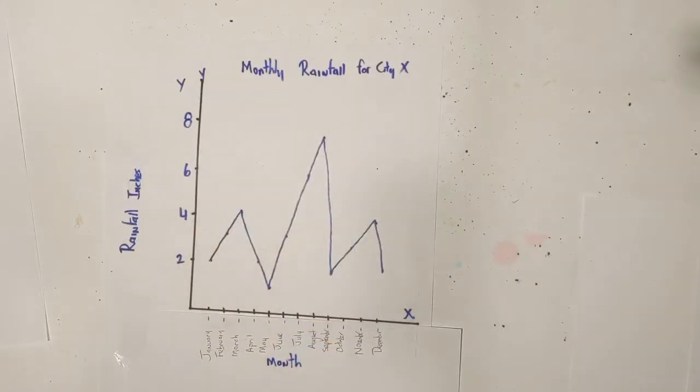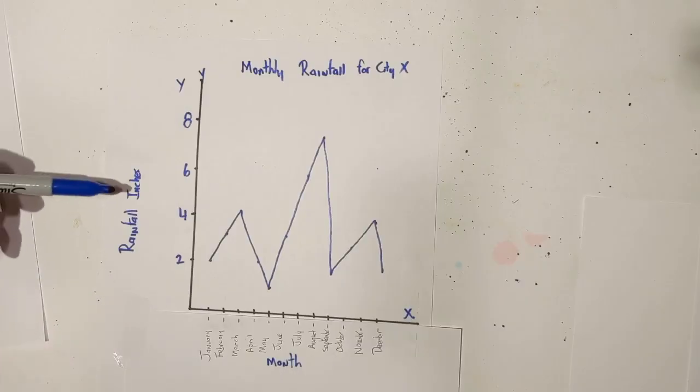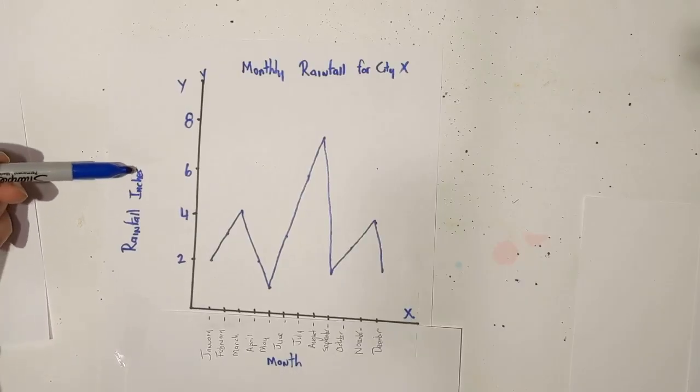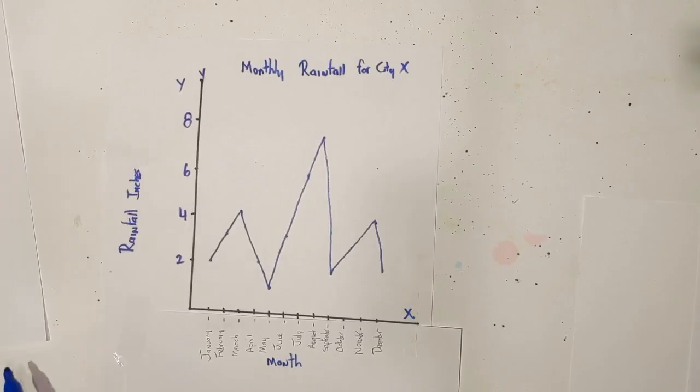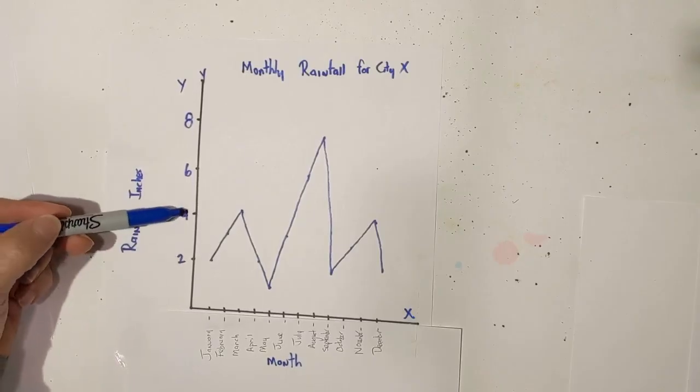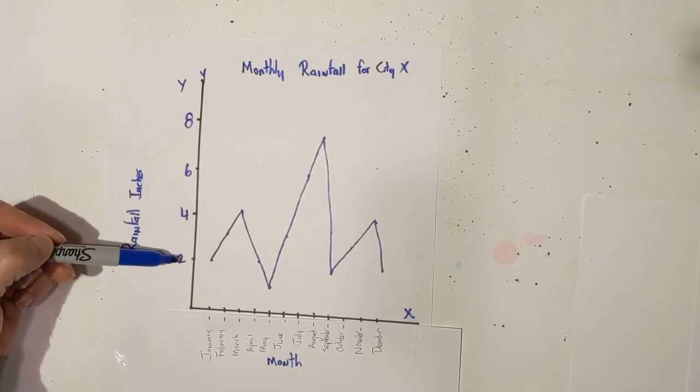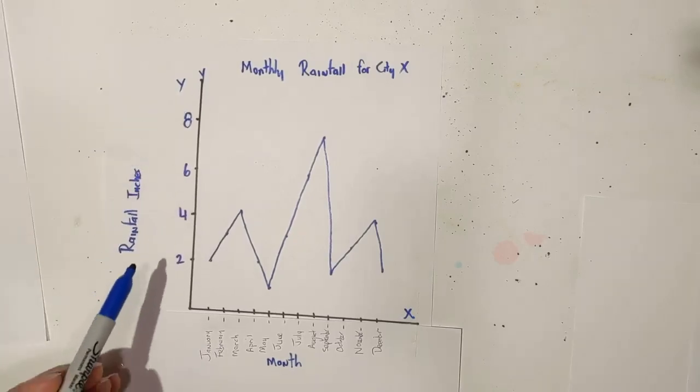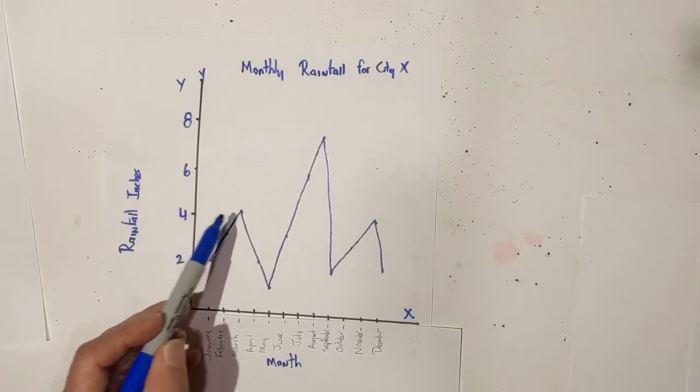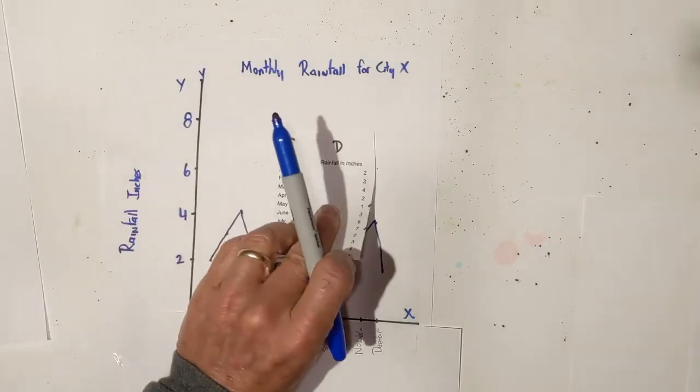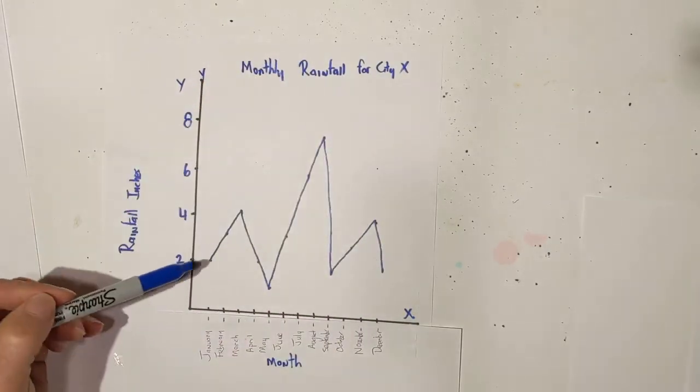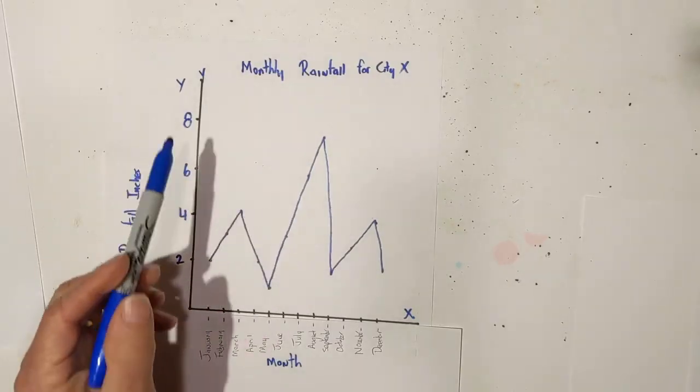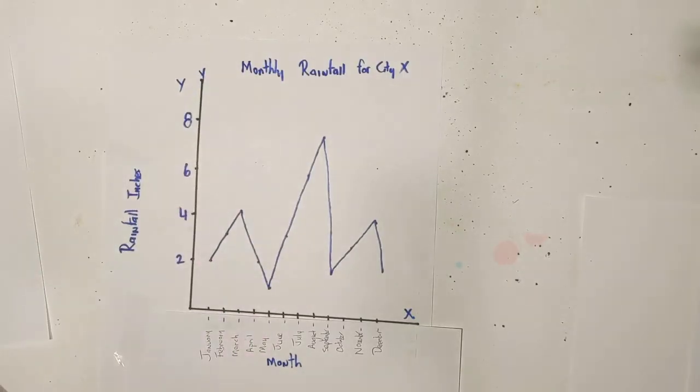In summary, here's what I did. I placed the independent variable on the x-axis and labeled it. I put the dependent variable on the y-axis and labeled it. I figured out a consistent scale. Notice that it is going up by two each time. I plotted all of my data from my data table, I connected the dots, and gave it a title. I hope that was helpful.